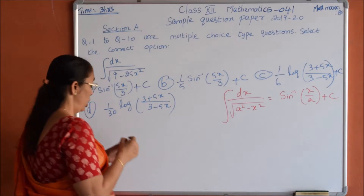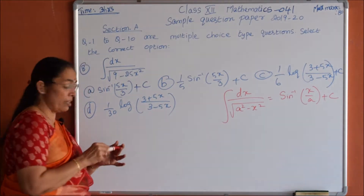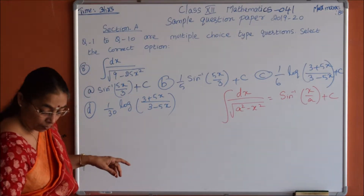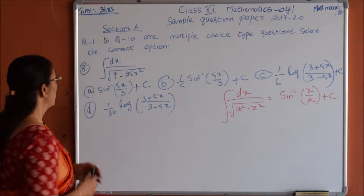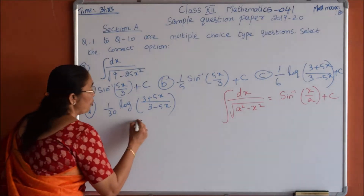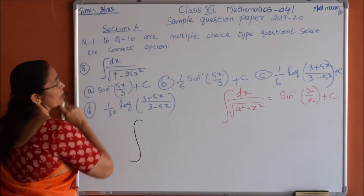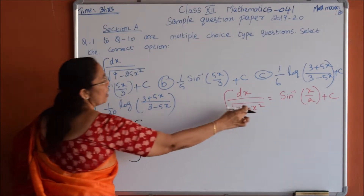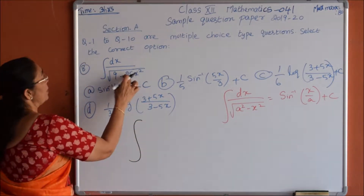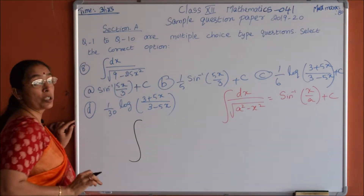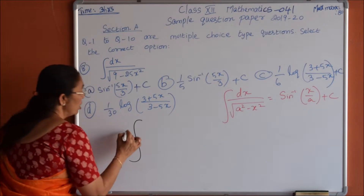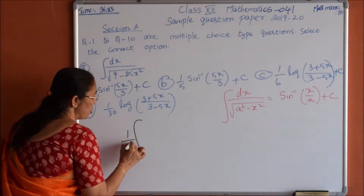Let us arrange the given expression to this form. The coefficient of x squared must be 1, so let us take 25 outside — taking root 25 outside, so it will come as 5.